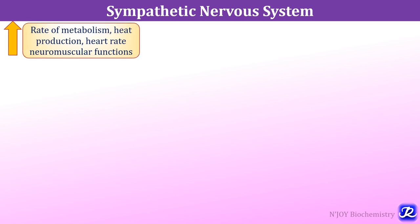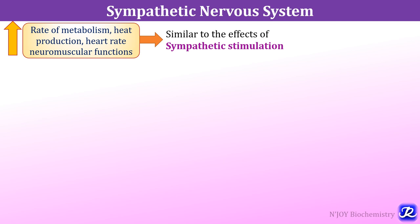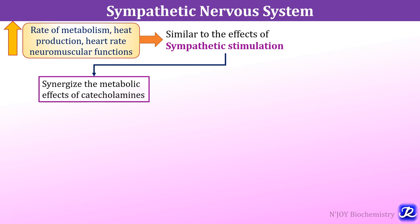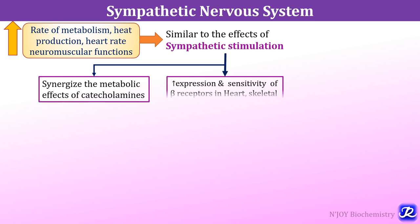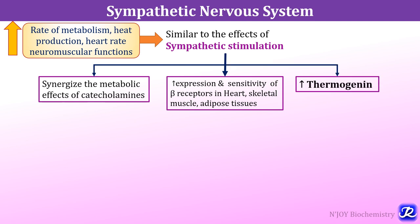Thyroid hormones increase the rate of metabolism, heat production, heart rate and neuromuscular functions, and these effects are similar to sympathetic stimulation. Thyroid hormones achieve this by synergizing the metabolic effects of catecholamines — including increased lipolysis, gluconeogenesis and glycogenolysis — and by increasing the expression and sensitivity of beta receptors to catecholamines in the heart, skeletal muscles and adipose tissue. T3 also increases production of thermogenin, which is partly responsible for the thermogenic action of catecholamines.